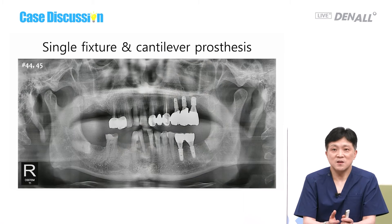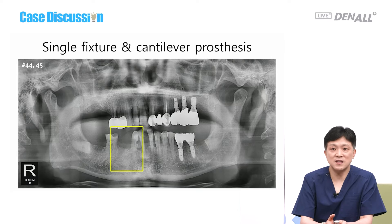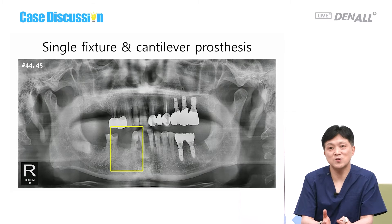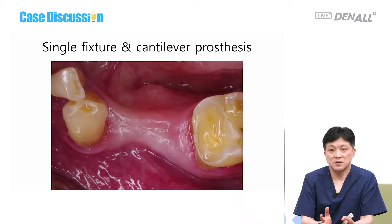The first option is a single fixture with cantilever — either mesial or distal. The mesial cantilever is more stable when bite force is strong; distal cantilever is a little unfavorable, but sometimes necessary. The first patient has numbers 44 and 45 missing with very narrow width. Placing two regular fixtures would be impossible. On CT, the buccal-lingual width is okay, bone quality is not bad, and bone height is pretty good.